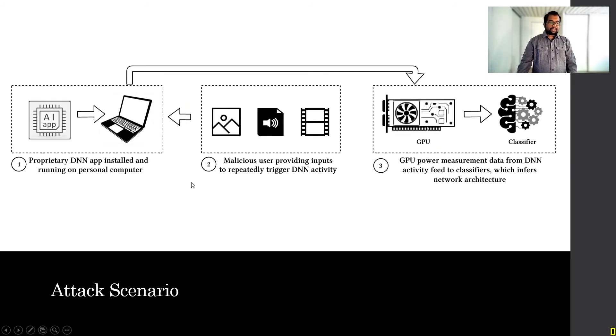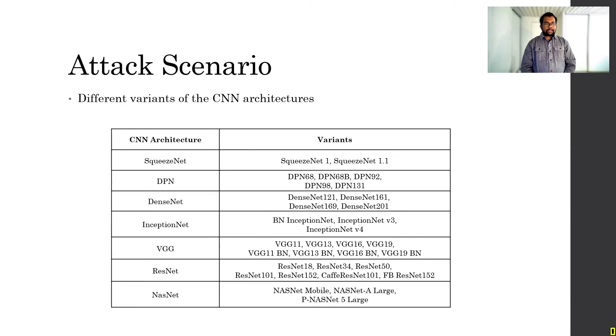Here is an example attack scenario. Some user may be using some AI application, which uses video, audio, or maybe image, to do some tasks, and they are running that on their computer. If we have some client installed on that computer, which monitors the GPU power draw pattern, then we can classify and get our hands onto some secret information that that proprietary DNN application might not want to reveal.